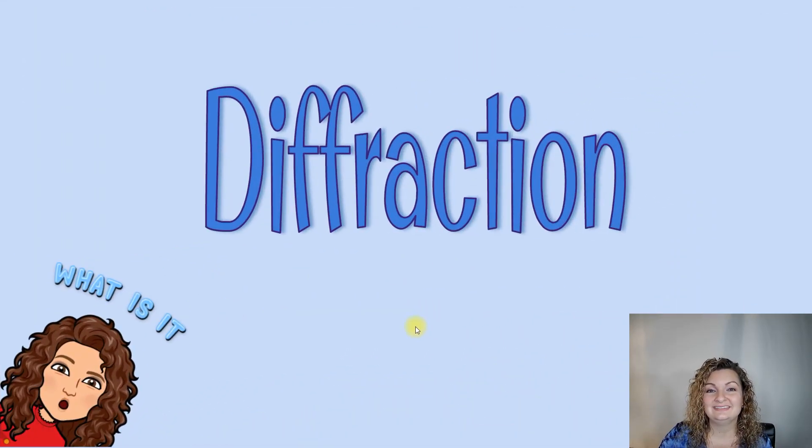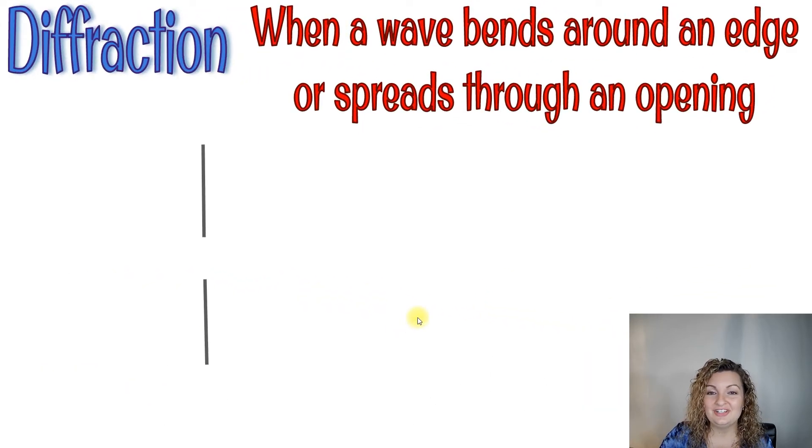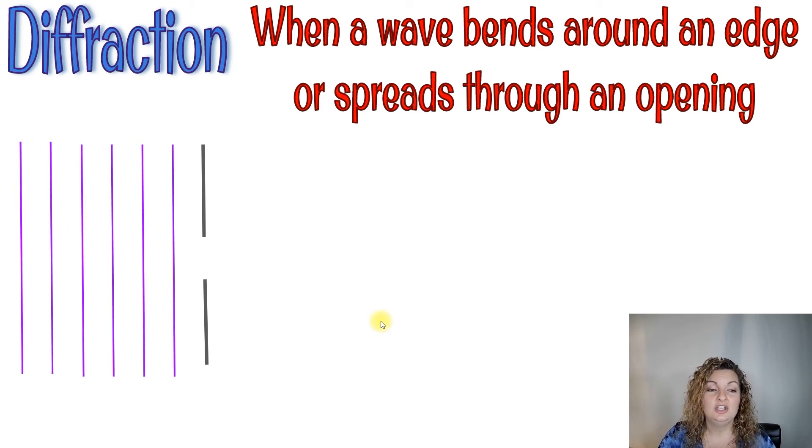Diffraction. So diffraction is when a wave bends around an edge or spreads through an opening. So here we have a barrier and we have this gap or opening right in the middle of it. So when the wave approaches it, you can see that it's going to have this bending effect, which we call diffracting. And this can also occur around a corner as well.